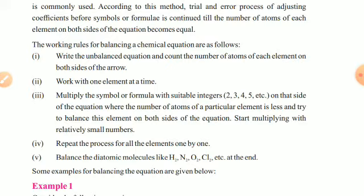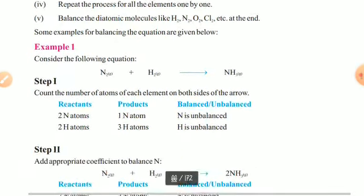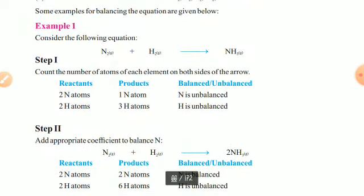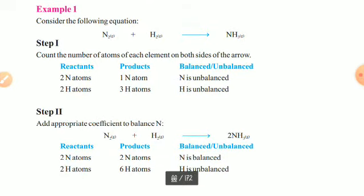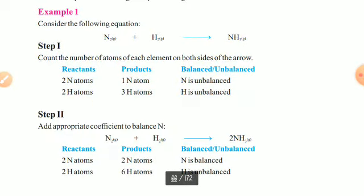Looking at the example, on both sides of the arrow we see hydrogen: 2 atoms on the reactant side and hydrogen on the product side. But in the product we have hydrogen 1 atom and hydrogen 3 atoms, so nitrogen and hydrogen are both unbalanced. Step 2: write an appropriate coefficient to balance.